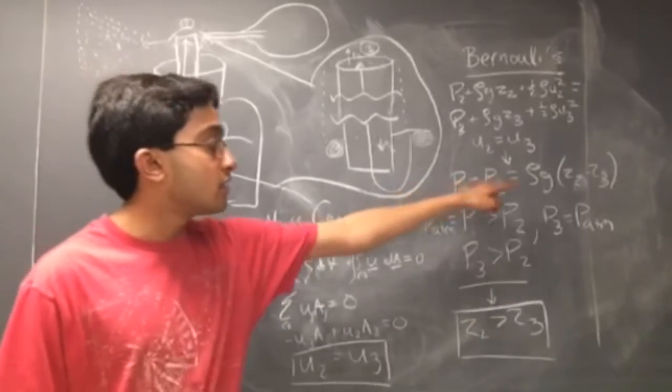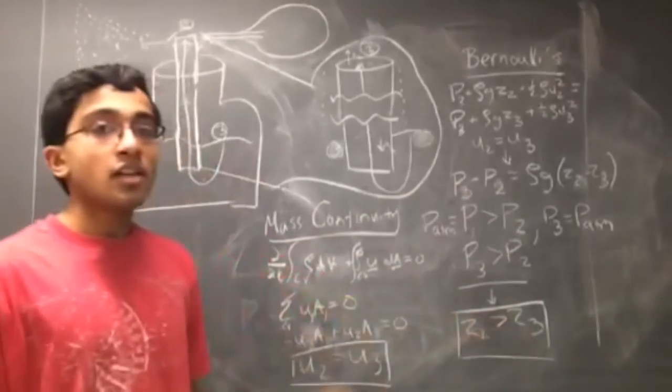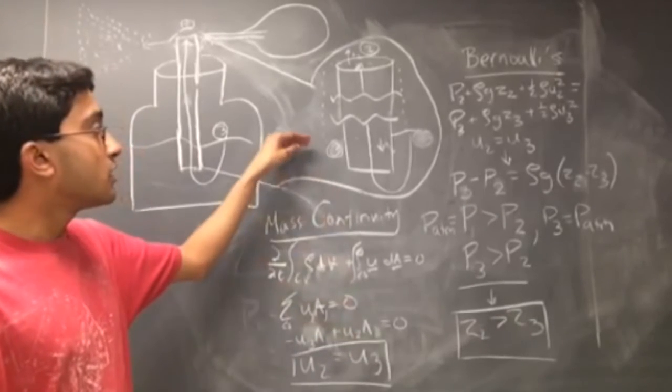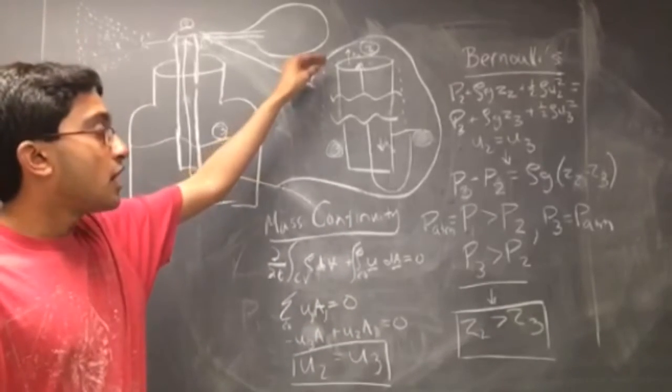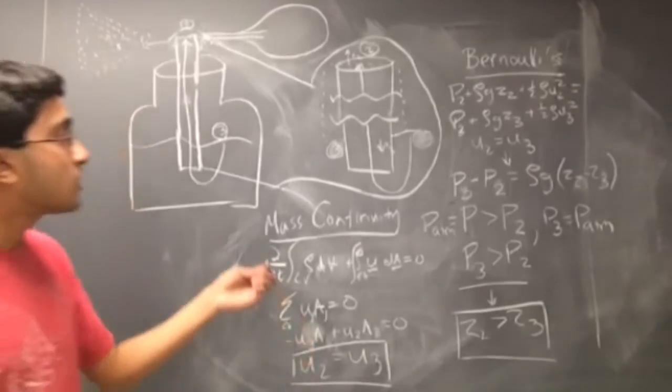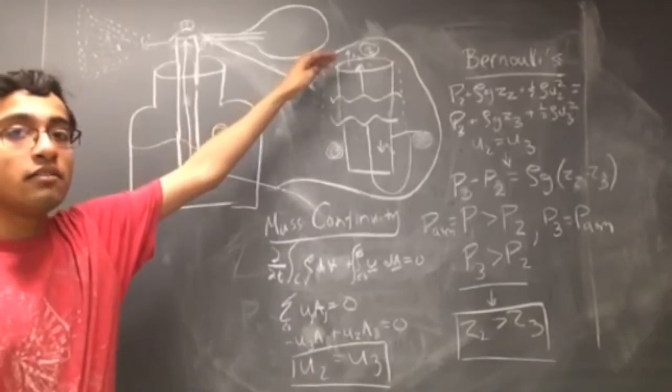Plugging that in here, we find that Z2 is greater than Z3. This proves that the liquid is going to be moving upward. The velocity will be non-zero, and that is how the liquid will get to the top of the tube.